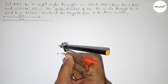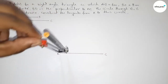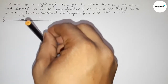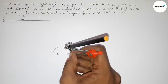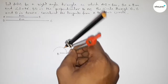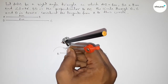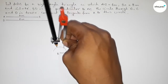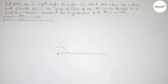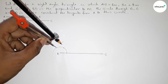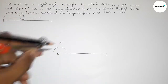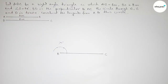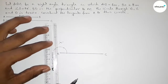Putting the compass here with the same length and cutting an arc, then placing the compass again with the same length and cutting here, so both curves intersect at a point, giving us the 90 degree direction.